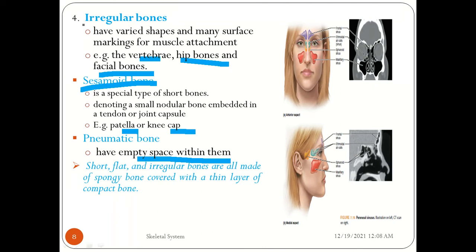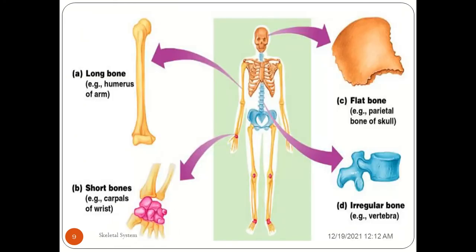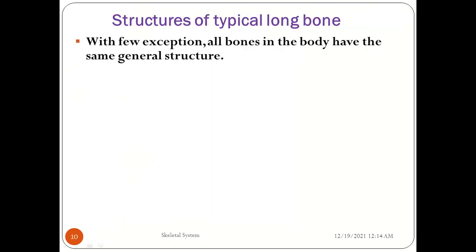To summarize the classification: long bones — example, the humerus (arm bone), where length is greater than width. Short bones — example, carpal bones of the wrist such as the scaphoid. Flat bones — example, the parietal bone of the skull, which is flat and curved. Irregular bones — example, the vertebrae, which have many surfaces for muscle attachment.